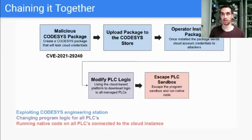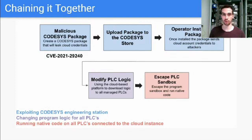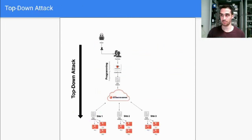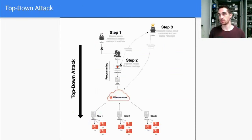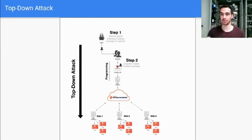A quick recap on the top-down attack: we create a malicious package and upload it to the Codesys Store. Operators install this package and the cloud credentials of the operators are sent back to us. Then we can do whatever we want with the operation — we can start PLCs, run code, do anything we want. Starting from an engineer, moving to the cloud, and then to all of the devices in the operation.